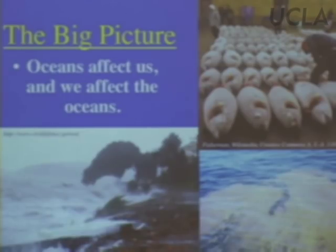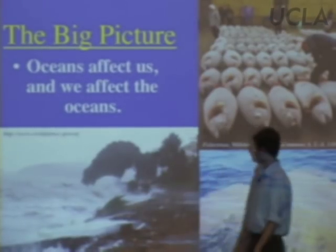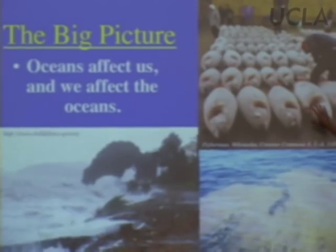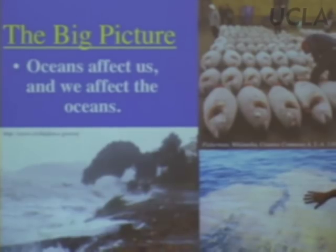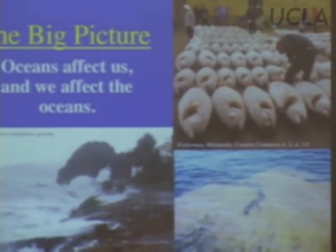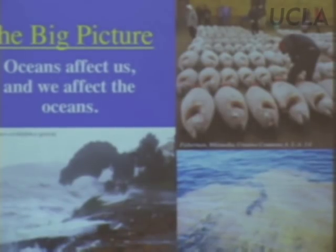This is going to include waves and storms and disasters like that. It's going to include resources we derive from the ocean. This is a picture of Tsukiji fish market in Tokyo — those are tuna being sold. And of course there are biological interactions that aren't so good as tuna. In this case, a red tide — a toxic bloom of algae in the ocean that can kill fish and actually cause other problems.